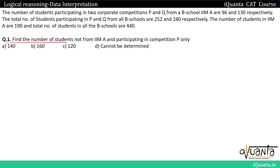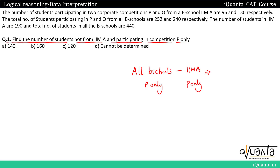The first question is to find the number of students not from IMA and participating in competition P only. First, we find the number of students from all B schools participating in P only, then remove the number of IMA students participating in P only. To do that, we first find IMA students participating in P only.